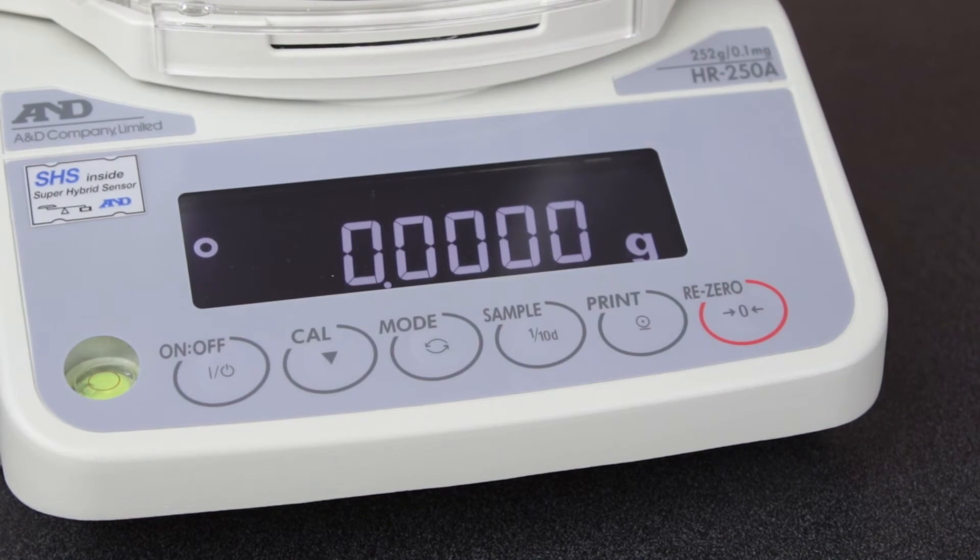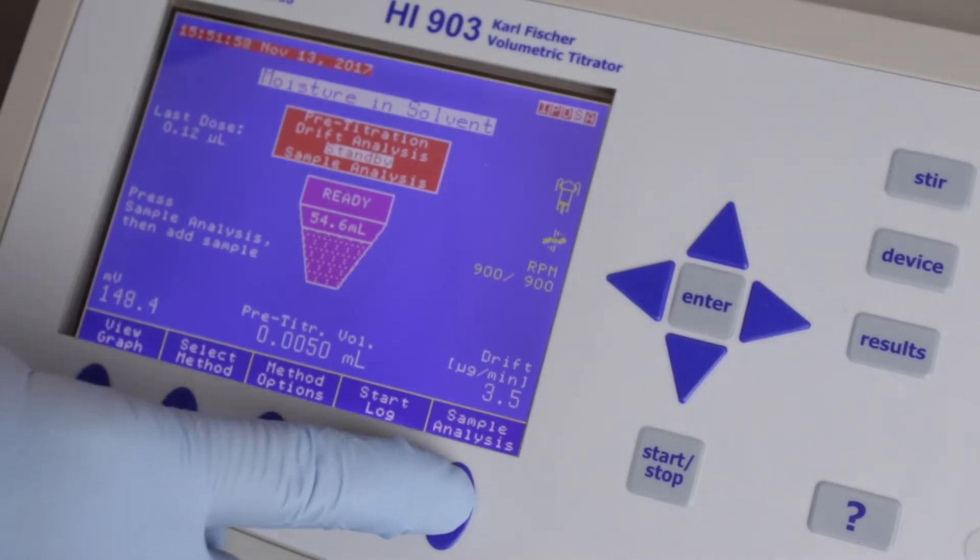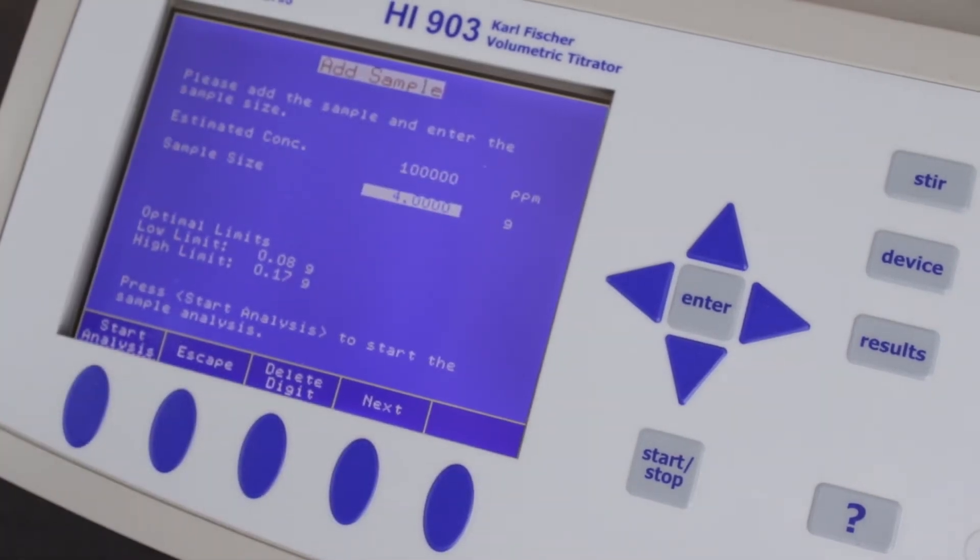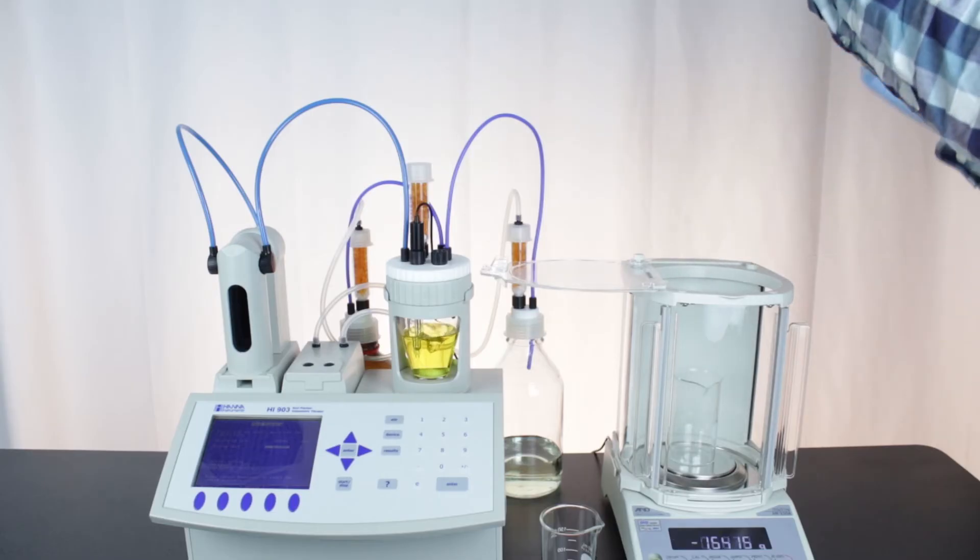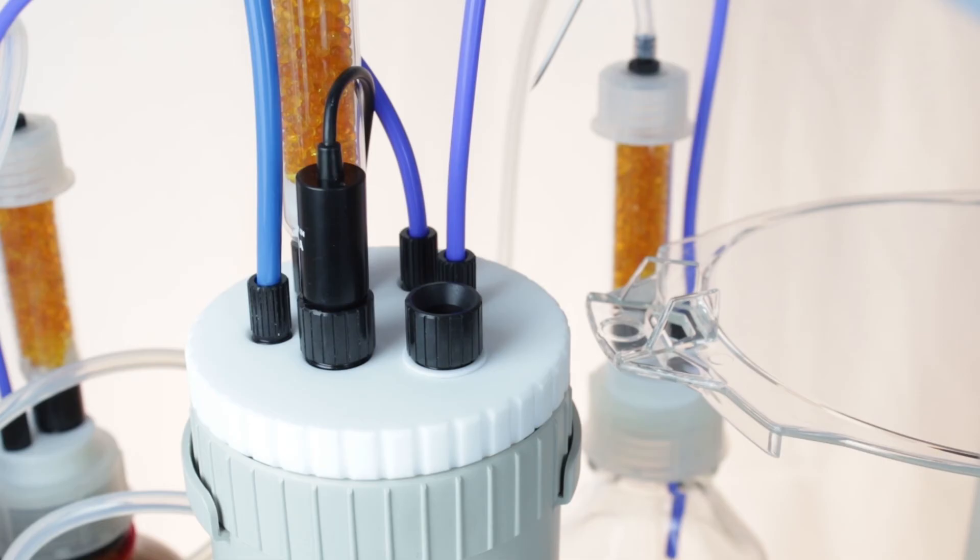Now we'll inject. Press the sample analysis button on your titrator to begin your Carl Fischer test. Add the sample by inserting the needle through the septum and injecting just below the surface of the solvent.